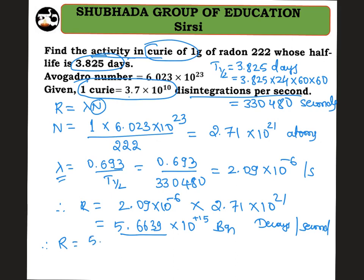Therefore R equals 5.6639×10¹⁵ divided by 3.7×10¹⁰, which gives 1.5×10⁵ curie. That is the answer for this particular problem. Be careful while finding the decay constant as well as the activity.